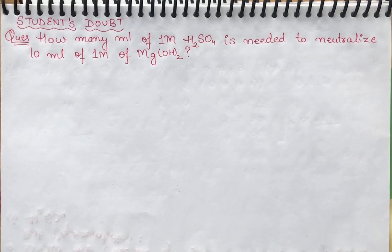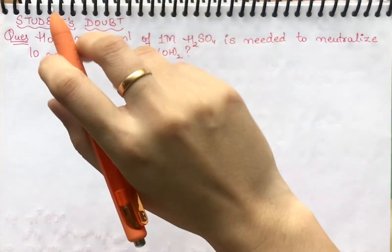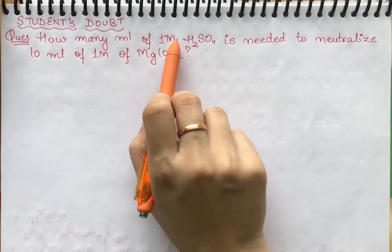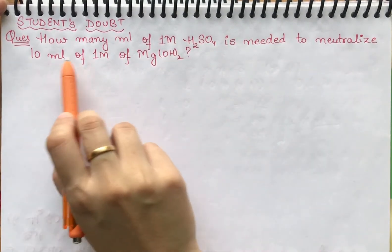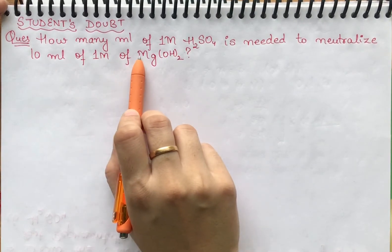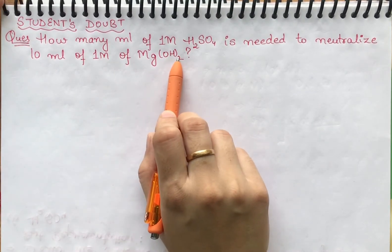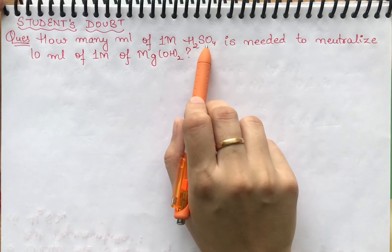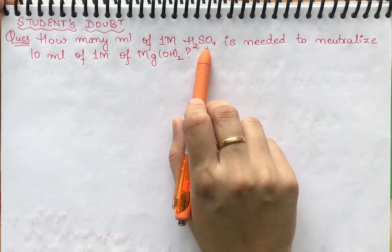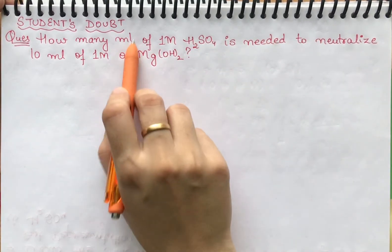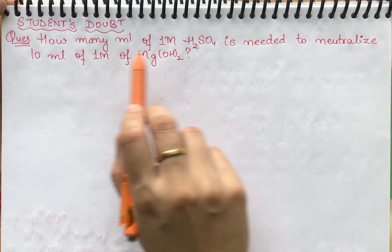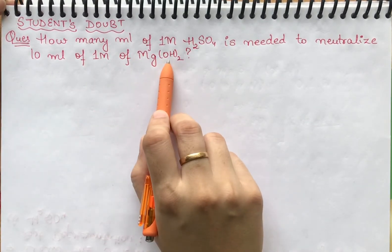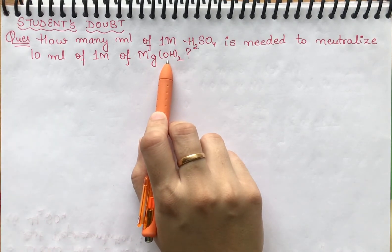Students, we have a student doubt. They asked how many ml of 1M H2SO4 is needed to neutralize 10 ml of 1M Mg(OH)2. We have a 1 molar solution of H2SO4 and they asked how much volume is required if you have 10 ml of 1 molarity Mg(OH)2, which is magnesium hydroxide, to neutralize.